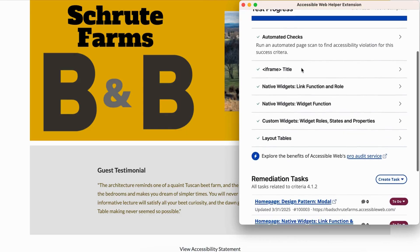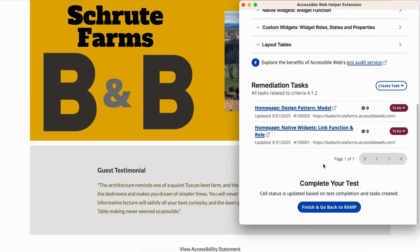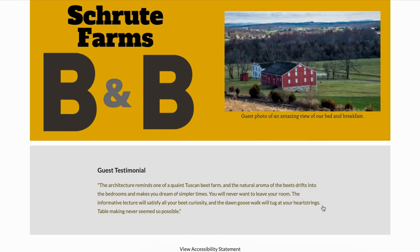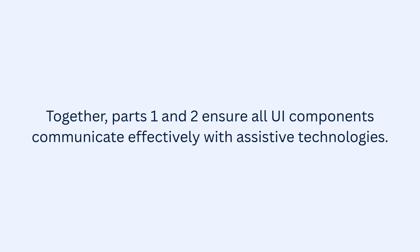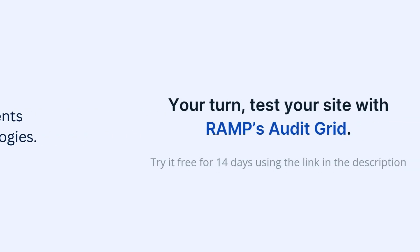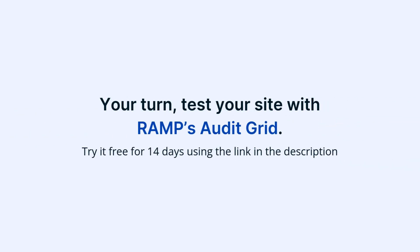That wraps up Part 2 of Testing for Success Criterion 4.1.2. Together, Parts 1 and 2 ensure all UI components communicate effectively with assistive technologies. Now it's your turn — test your site with RAMP's Audit Grid. Try it free for 14 days using the link in the description.